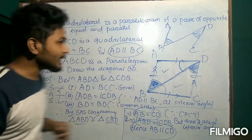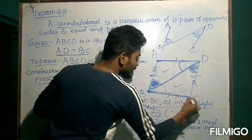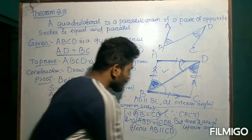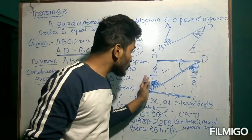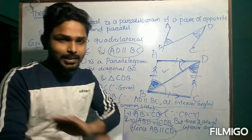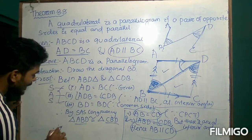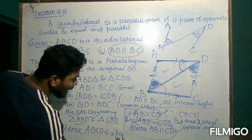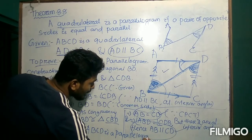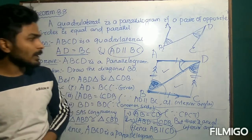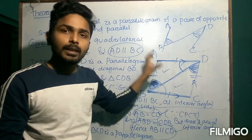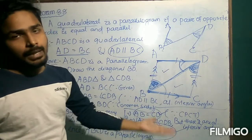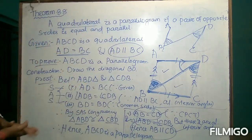Initially it was given that ABCD is only a quadrilateral in which one pair of opposite sides — AD and BC — are equal and parallel. We have proved that the other pair of opposite sides AB and CD are also equal and parallel. Since both pairs of opposite sides are equal and parallel, we can conclude: hence ABCD is a parallelogram. This is the proof of theorem number 8.8.